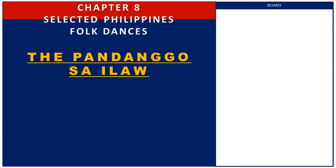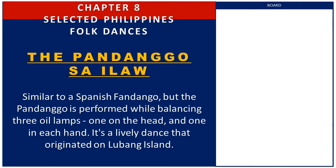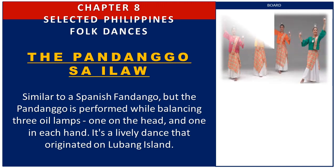Next is the Pandango sa Ilaw. The Pandango sa Ilaw is similar to a Spanish fandango, but the pandango is performed while balancing three oil lamps — one on the head and one in each hand. It is a lively dance that originated on Lubang Island. The music is in three-fourth time and it is usually accompanied by castanets. Here are some example pictures.